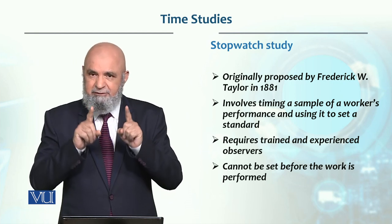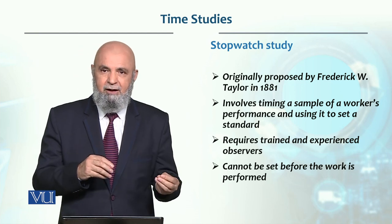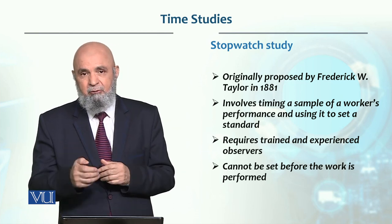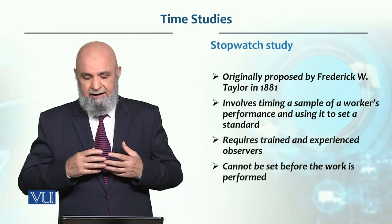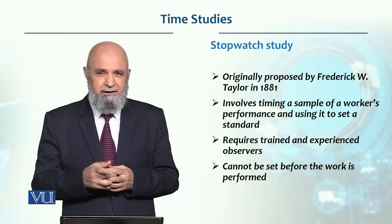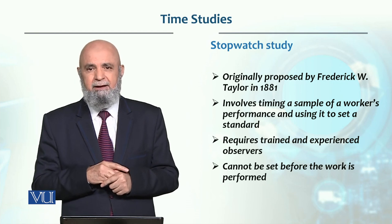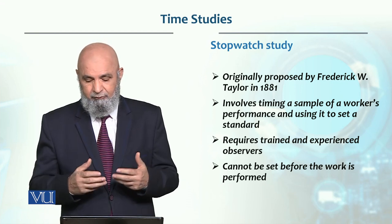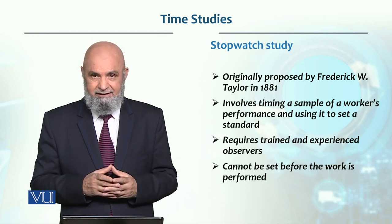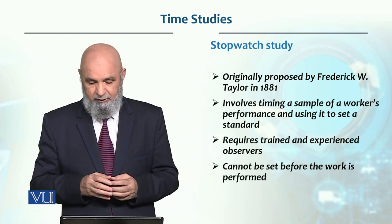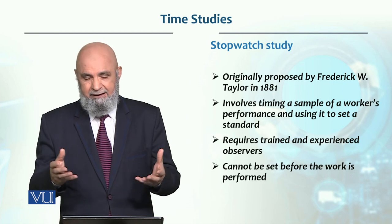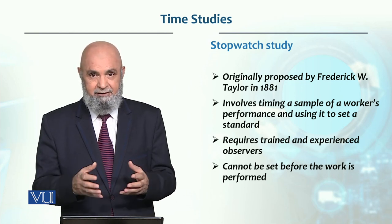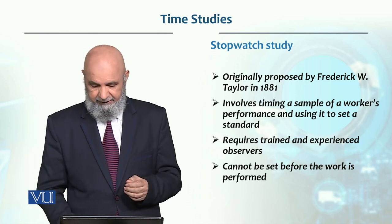ہر بار اس work element کا time same نہیں ہوگا - کبھی تھوڑا زیادہ، کبھی تھوڑا کم۔ تو ان سب کا average لیں گے اور average observed time آئے گا۔ اس stopwatch study میں experienced observer کی ضرورت ہوتی ہے کیونکہ اس نے observe کرنا ہوتا ہے کہ worker جان بوجھ کر slow تو نہیں کر رہا یا بہت زیادہ تیز تو نہیں۔ یہ چیز books میں نہیں سکھا سکتے، experience سے آتی ہے، اور یہ standard work کے دوران develop ہوتا ہے۔